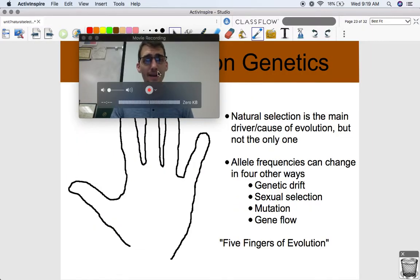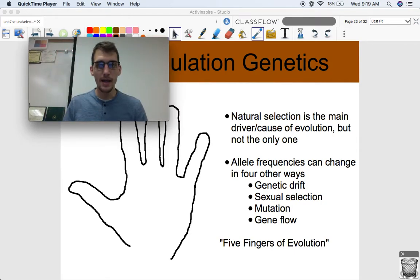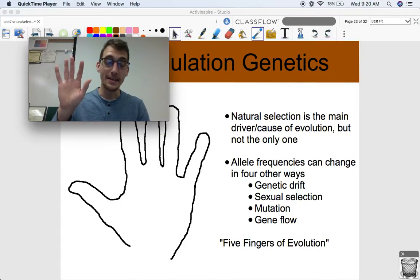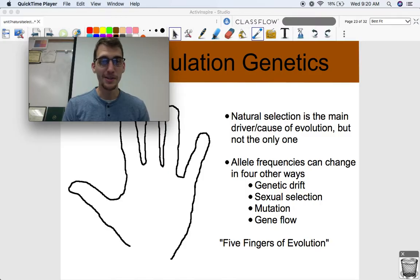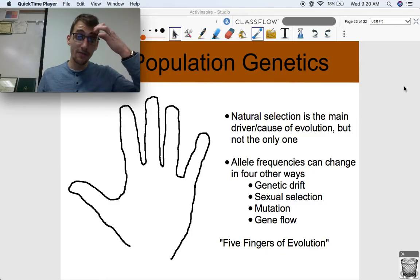There's five different ways that can happen, and how we're going to memorize them is by using our hands here. If you're taking notes, I encourage you to draw your hand or trace your hand, and then we're going to walk through our hand here, our five fingers of evolution. I'm stealing it from Paul Anderson of the Bozeman Science video series. We're going to use our hands to memorize our five different ways that allele frequencies can change from one generation to the next.